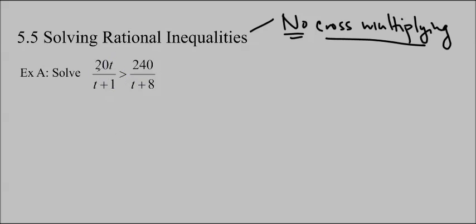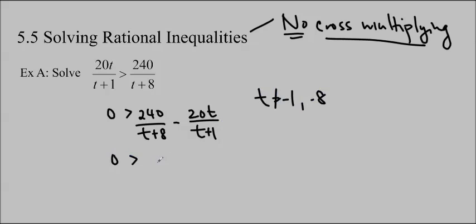So we're going to have to move everything over. That's method number 2. Let's get started. 0 is greater than 240 over t plus 8 minus 20t over t plus 1. And we'll write our restrictions in right here right now: t not equal negative 1 or negative 8.